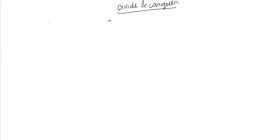To contrast with greedy algorithms: a greedy algorithm finds a localized optimum solution rather than a global solution. It finds the nearest goal at each step, which is different from divide and conquer.